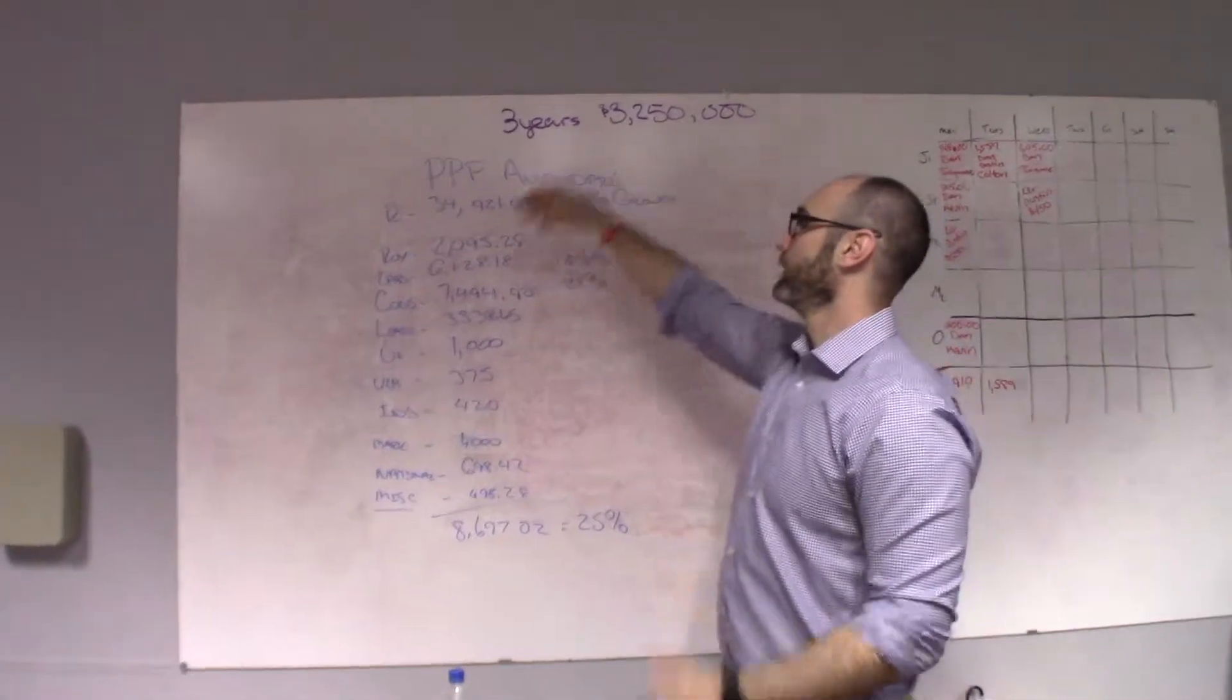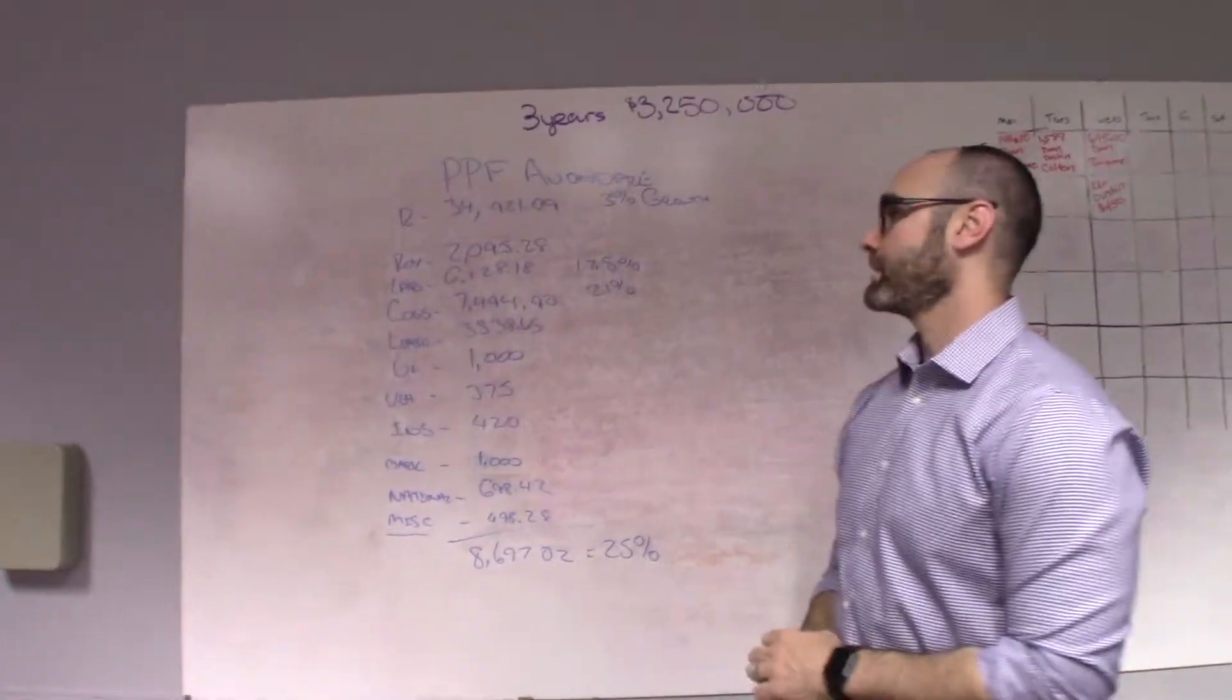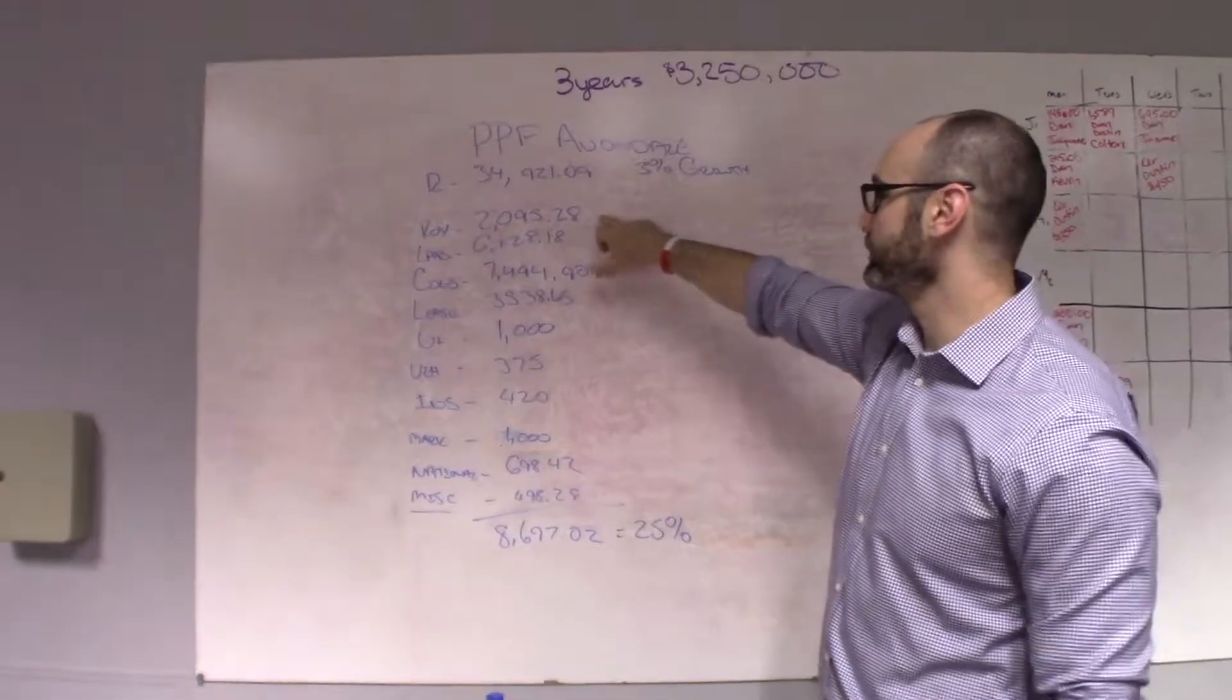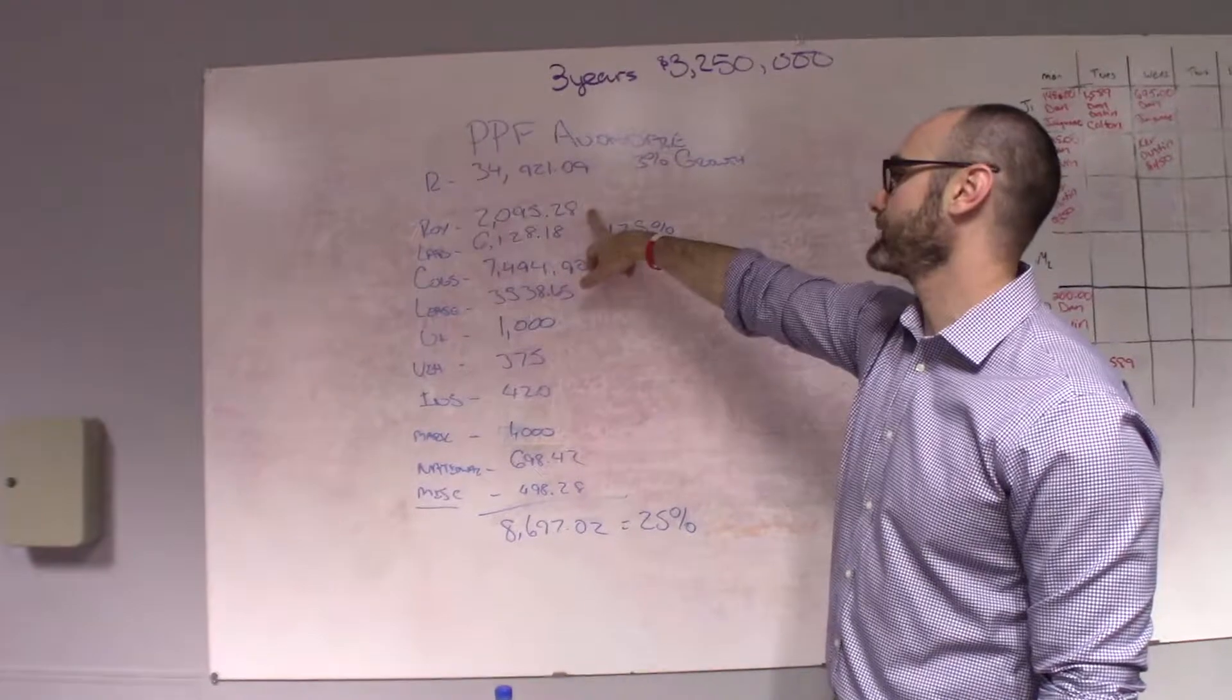So, just to go over the numbers, last month we did $34,921.09 in sales. Royalties, we pay 6%, so $2,095.28.